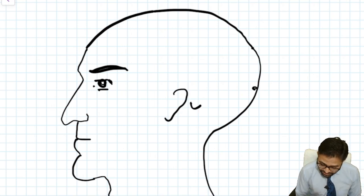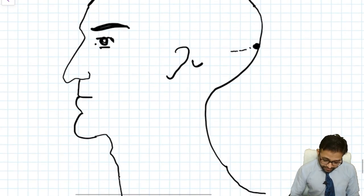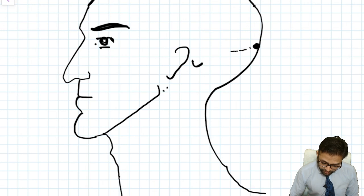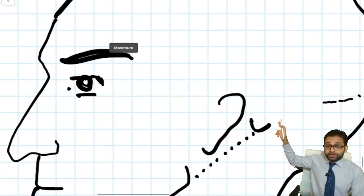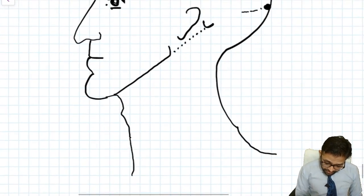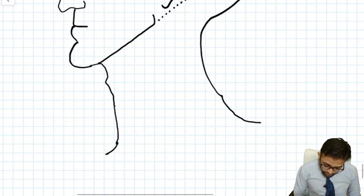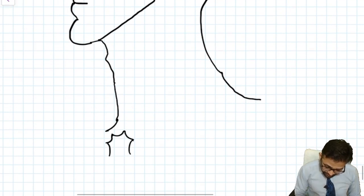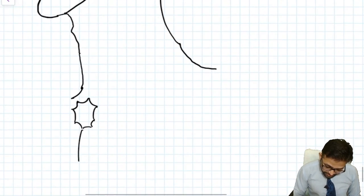Mastoid process, external occipital protuberance and our superior nuchal line. This is our margin of mandible and angle of mandible. Then you have to show the imaginary line joining the mastoid process with the angle of mandible.